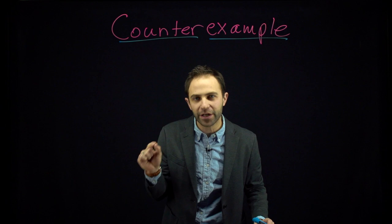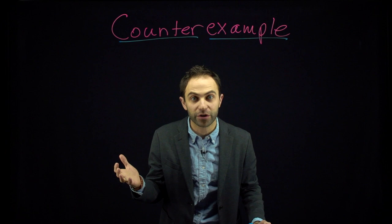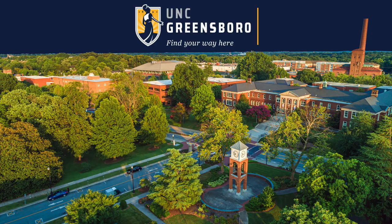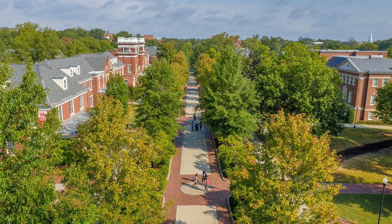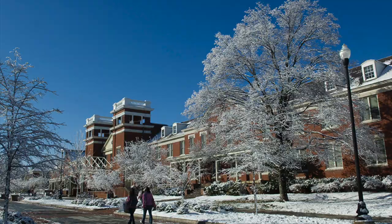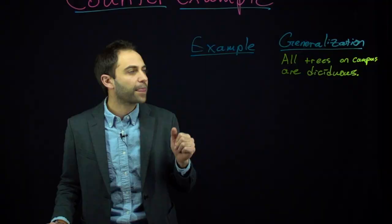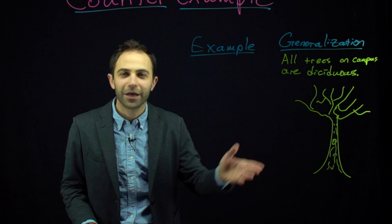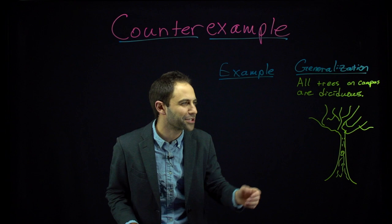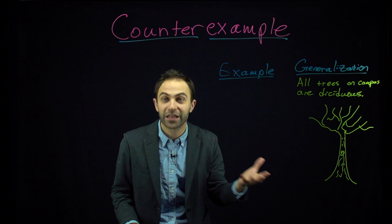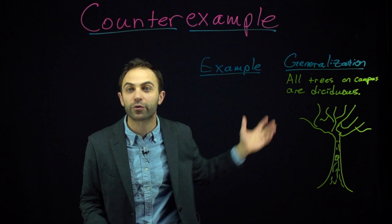A generalization or a general claim is just any claim about a bunch of stuff. For example: all trees on campus are deciduous. I teach at the University of North Carolina at Greensboro, and right now it is the winter, so the trees lose their leaves. Here's a drawing of a tree with no leaves. Some kinds of trees lose their leaves — those trees are called deciduous. So let's say I made a generalization that all the trees on campus are the kind of tree that loses its leaves. Is this true or not?